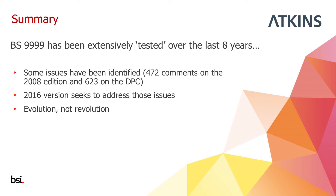In summary, BS9999 has been tested significantly over the last eight years — used many times in practice; at Atkins it's used for about half the buildings they design. Nearly 500 comments were received on the 2008 version, and 623 comments came in on the draft, all of which have been addressed in committee. The 2016 version is evolution, not revolution — the arrangement and configuration of the standard is the same, but improvements have been made where needed.